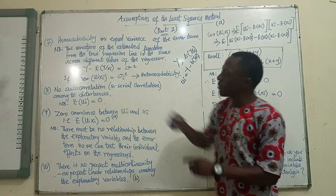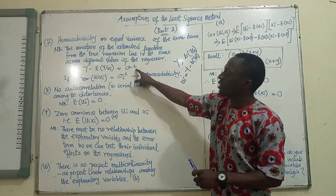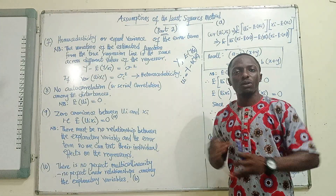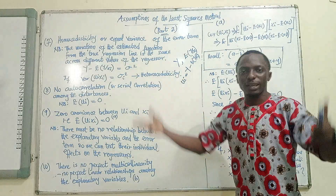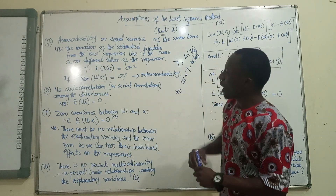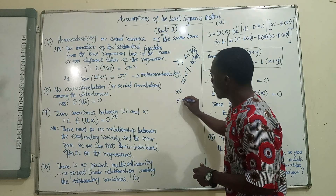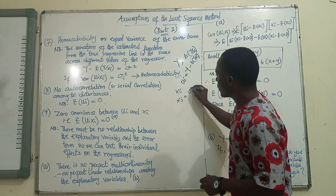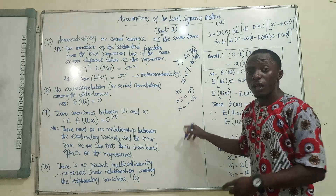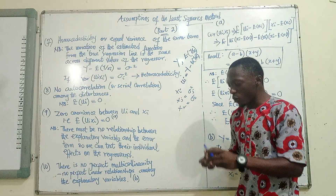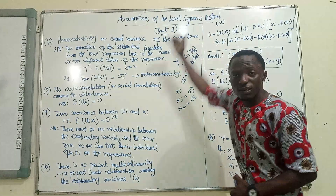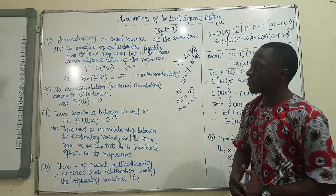This equal variance is denoted as sigma squared — that simply represents the variance. Now, when you do not have equal variance of the error term across different observations, then you have heteroscedasticity. Heteroscedasticity means that when considering Xi you have one variance, for Xj you have a different variance, and for Xk yet another variance. The OLS assumes the variance of the error term must be the same across different observations of the regressor.